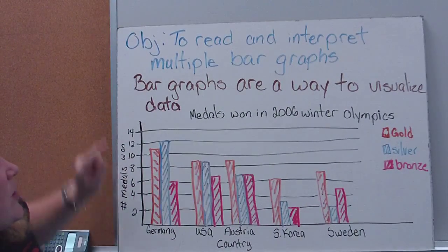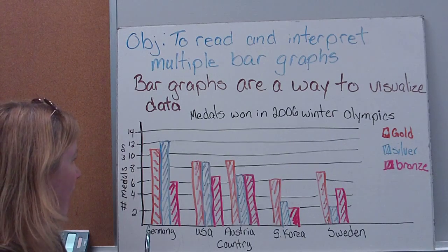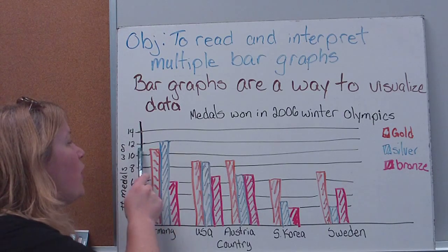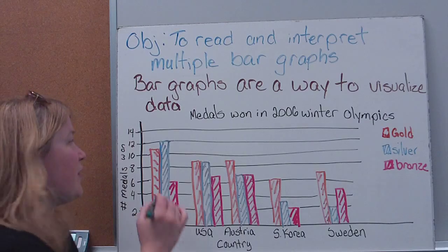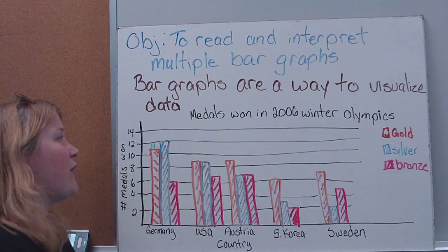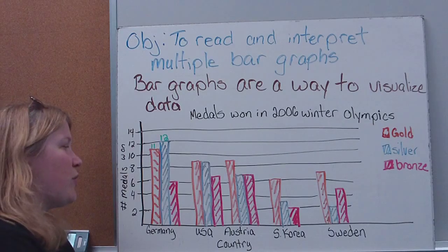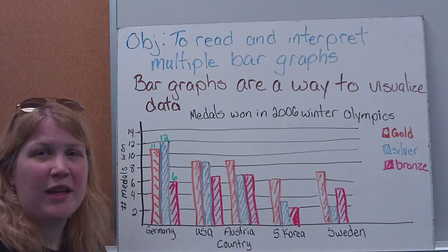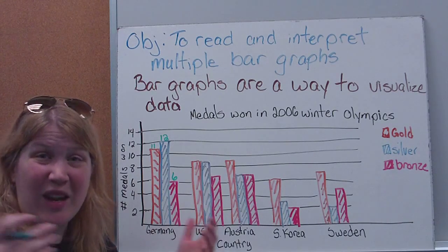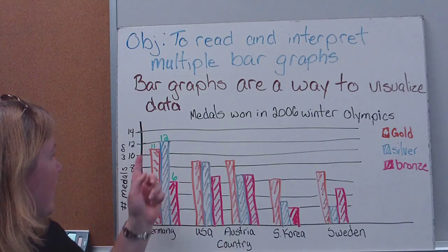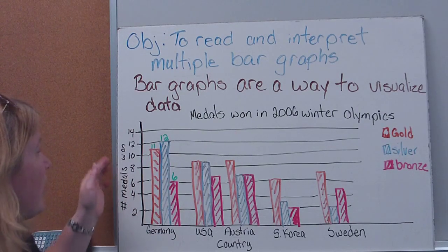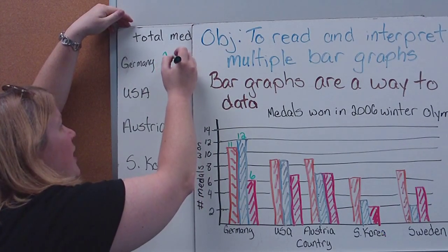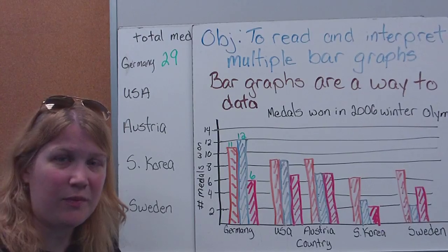Let's start with total medals. The scale goes up by twos. The gold medal bar for Germany ends between 10 and 12, so there were 11 gold. The silver comes right up to the line, so there were 12 silver. The bronze comes right up to the line, so there were 6 bronze. Altogether: 11 and 12 is 23, plus 6 is 29. Germany had a total of 29 medals.